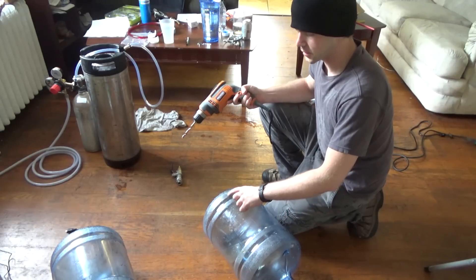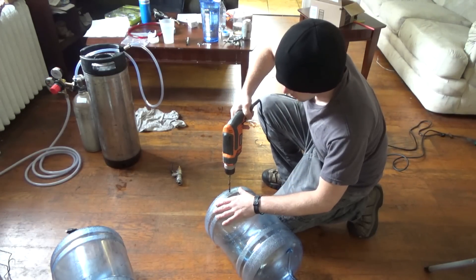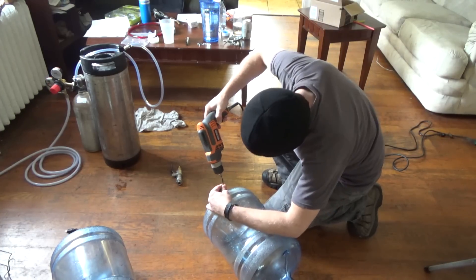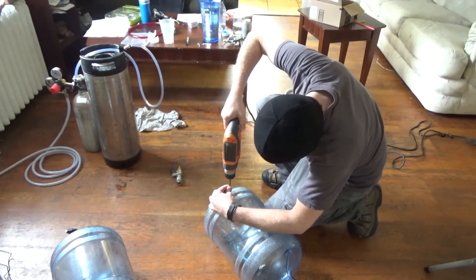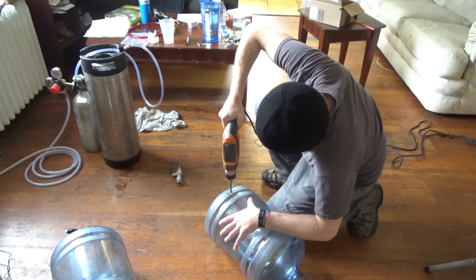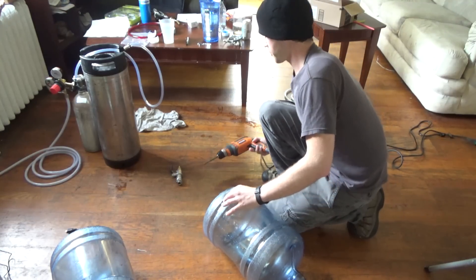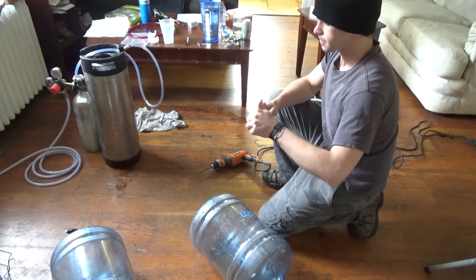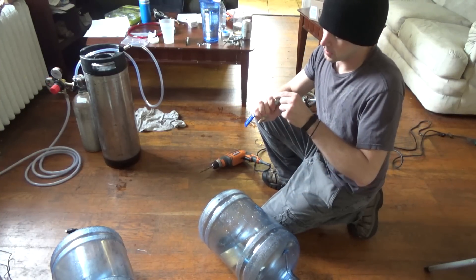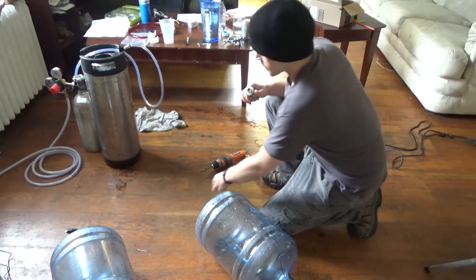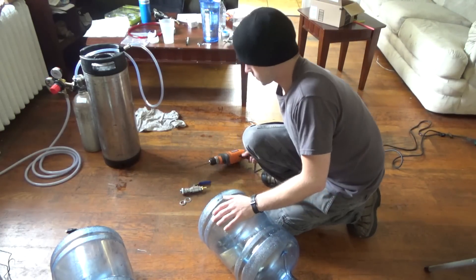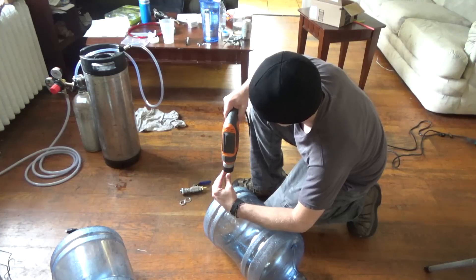All right, I made a mark on the jug, now I'm just gonna drill a hole through it. Hopefully it'll stay in place while I try this. Yep, that went pretty well. Now, since I don't have a bit that's 1/2 inch, I'm gonna have to ream out the hole that I've already done using the drill that I just used to drill the hole. Hopefully it'll work out pretty well.